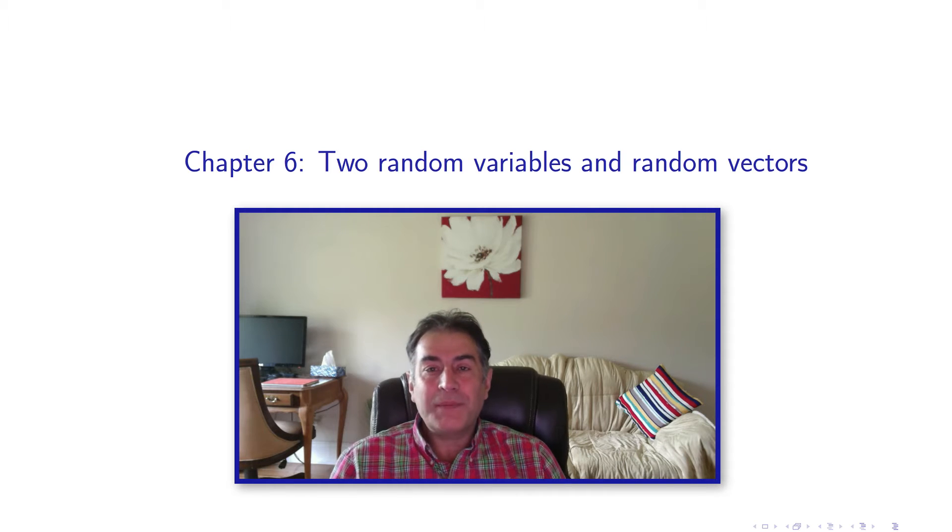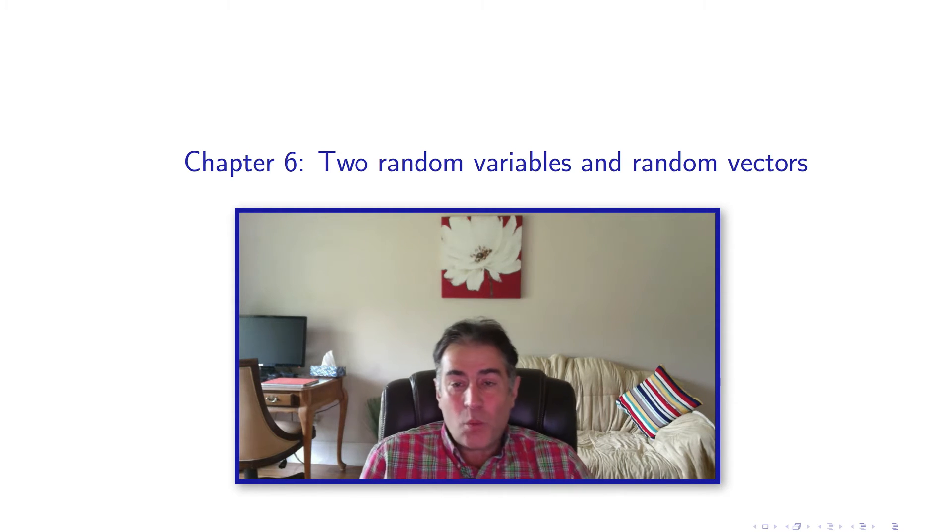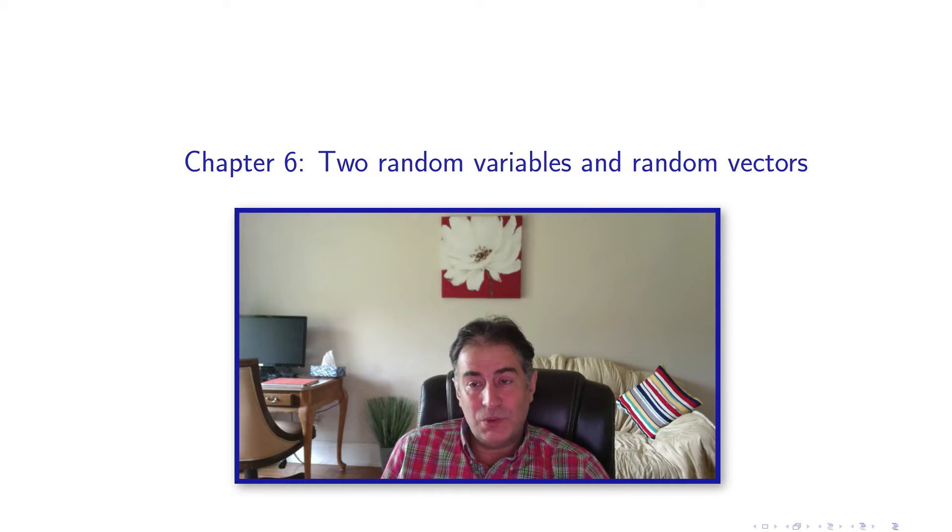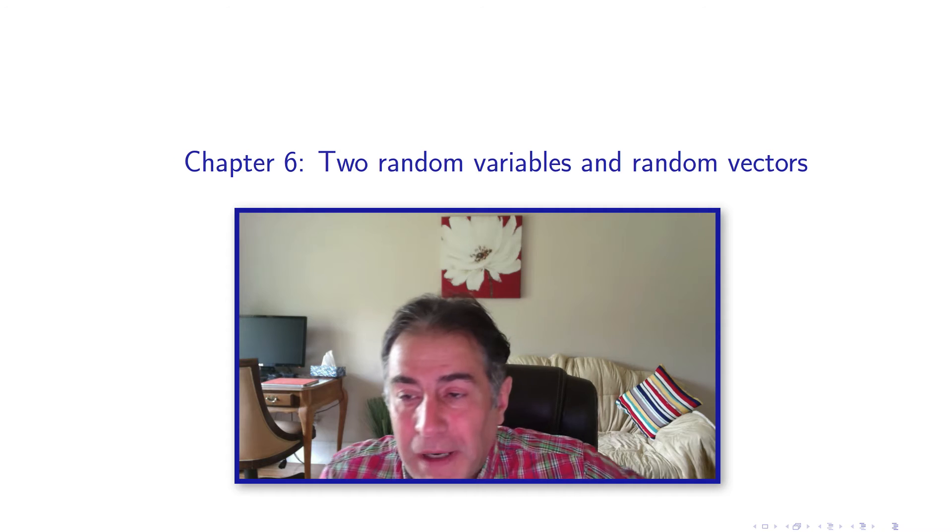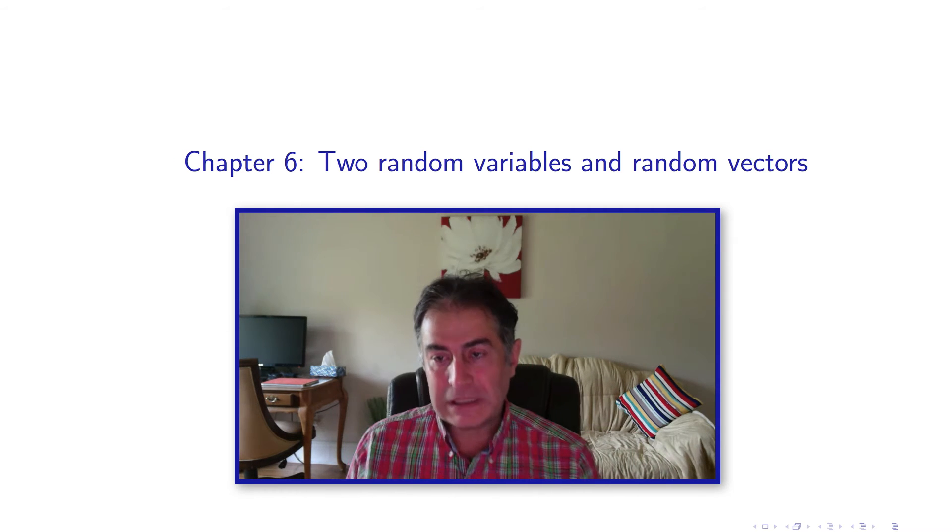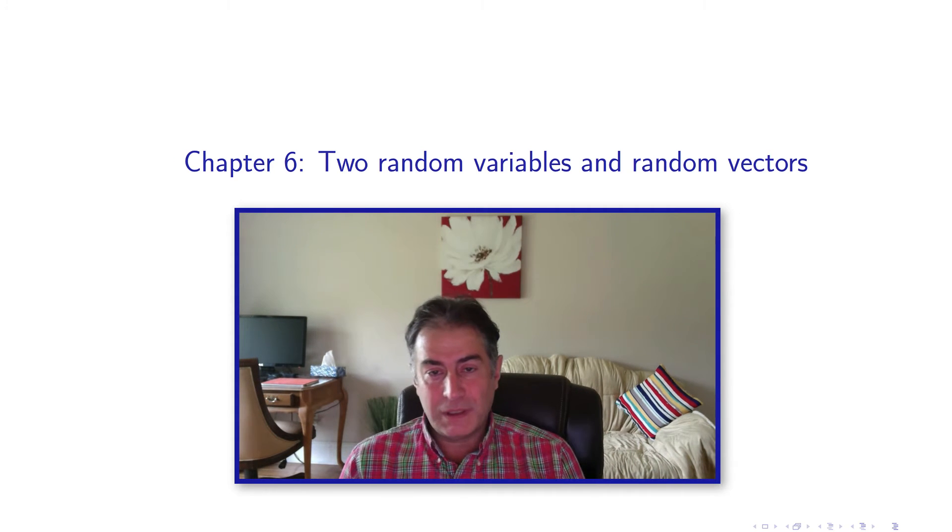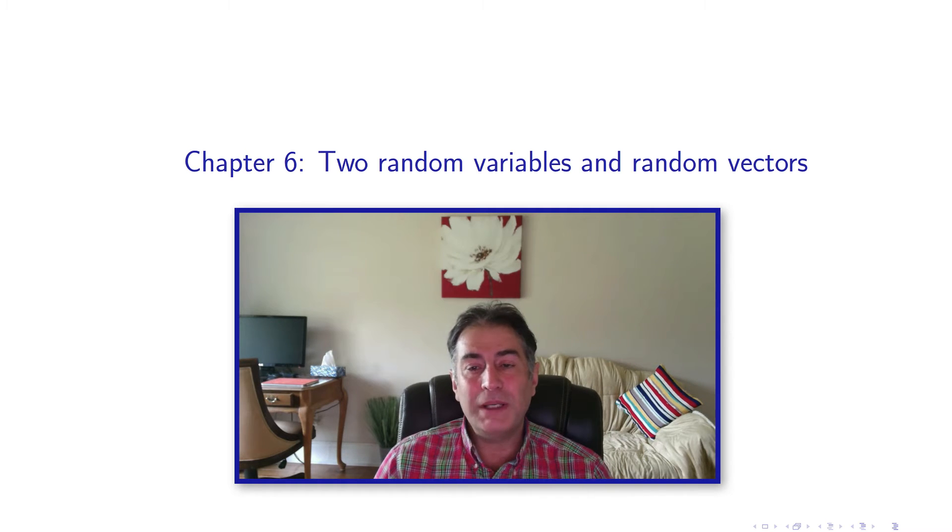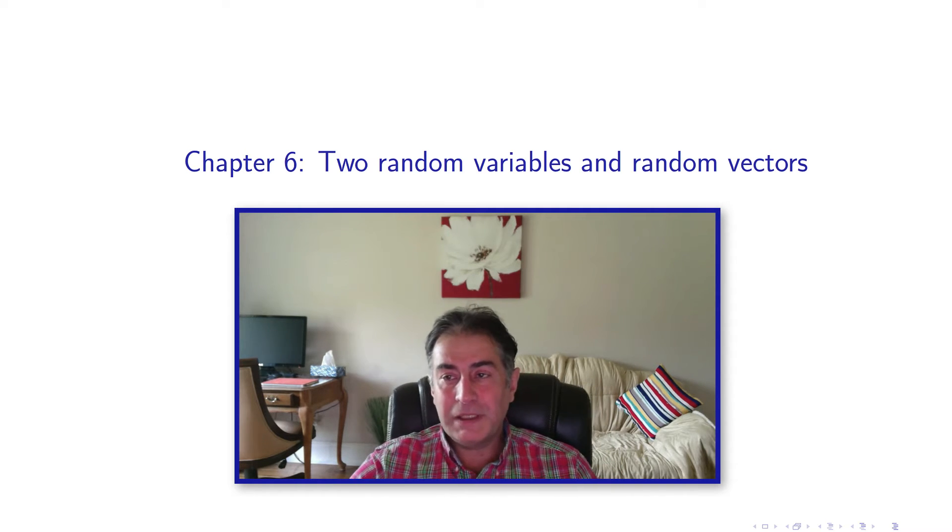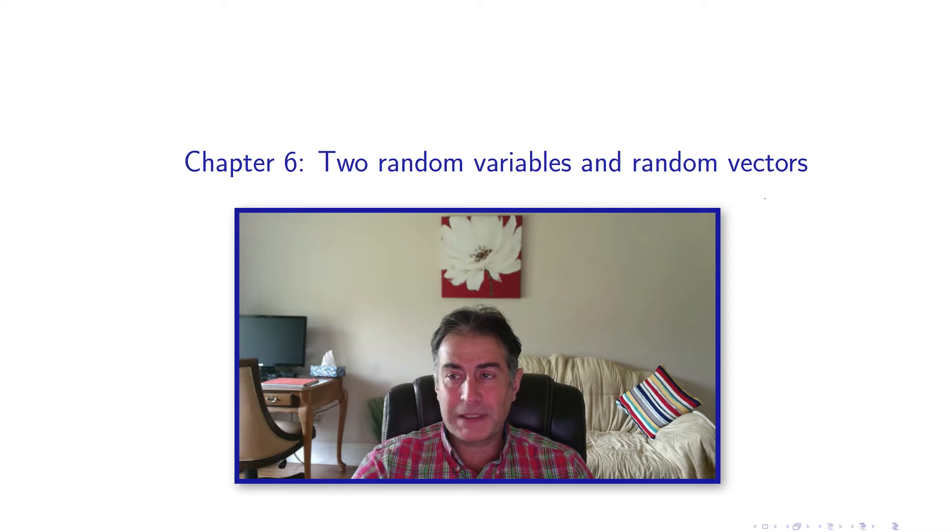In this chapter, we want to extend the definition of one single random variable into multiple random variables. We start with two random variables and then the extension to random vectors is very easy. If you learn how to work and manipulate two random variables, everything is going to be extremely easy.